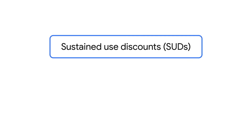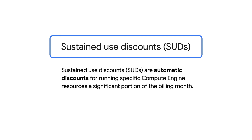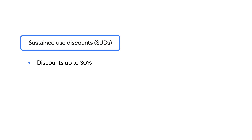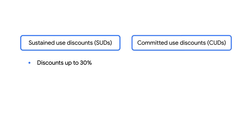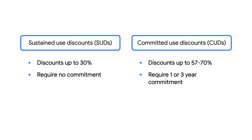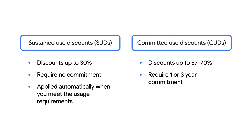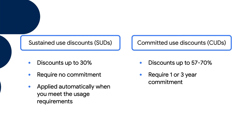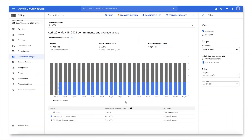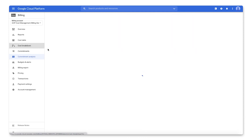Any Compute Engine resources that do not qualify for committed use discounts automatically qualify for sustained use discounts. Sustained use discounts are automatic discounts for running specific Compute Engine resources a significant portion of the billing month. Sustained use discounts give you up to 30% off, whereas committed use discounts give you up to 57% to 70% off. SUDs require no commitment and are applied automatically when you meet the requirements through your resource usage, without any action on your part. SUDs will automatically appear on your bill at the end of the billing cycle. You can view your sustained use discounts on the Cost Breakdown page located in the left-hand nav.